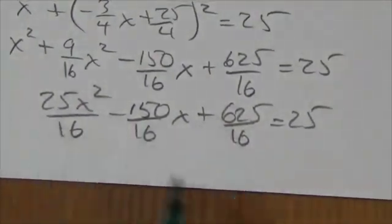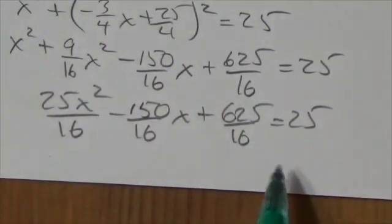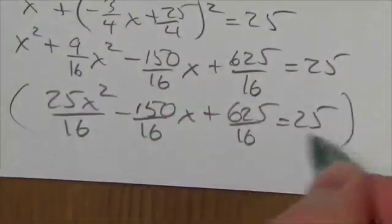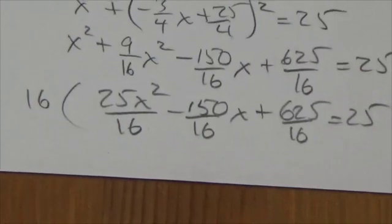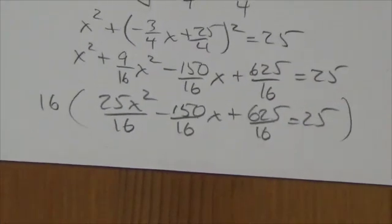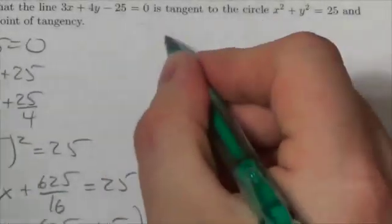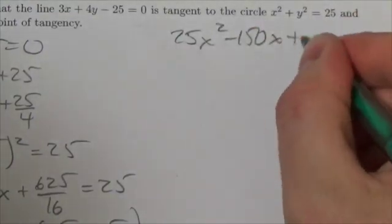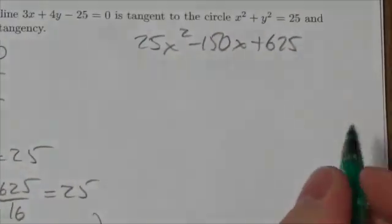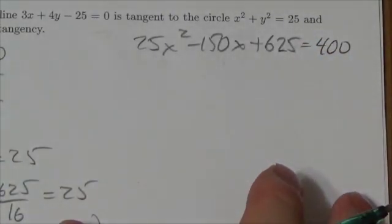Well, okay, we've got the makings of a quadratic here, but what we've got to do is get rid of the denominators. So we're going to multiply this whole thing through by 16. In a sense, this kind of goes back a little bit to the chapter that we did on rationals. So I'm going to multiply it through by 16 and that is going to get me 25 x squared minus 150 x plus 625. Okay, equals 400 on the other side there.